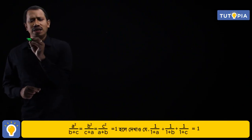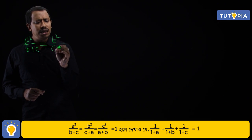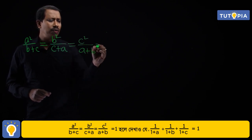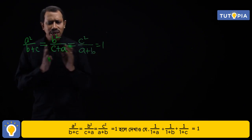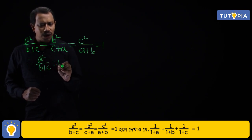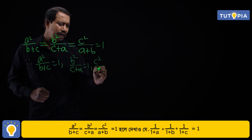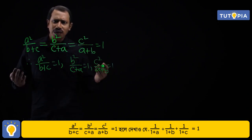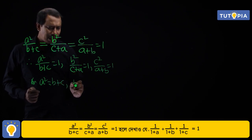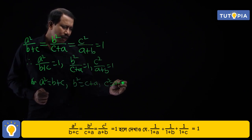I will solve this problem. Since a² / (b+c) = b² / (c+a) = c² / (a+b) = 1, I can write: a² / (b+c) = 1, b² / (c+a) = 1, and c² / (a+b) = 1. So I will write a² = b+c.